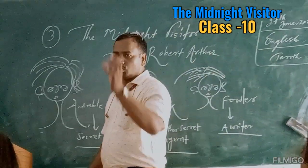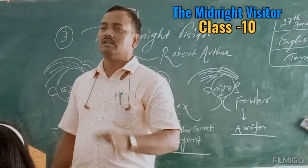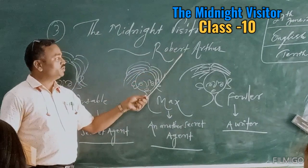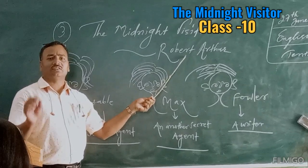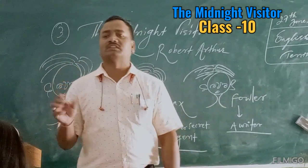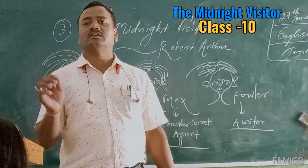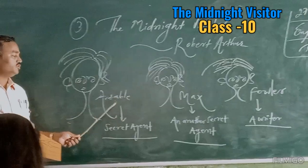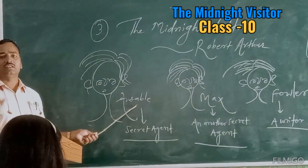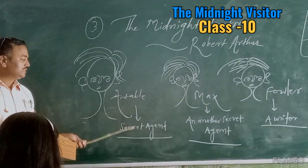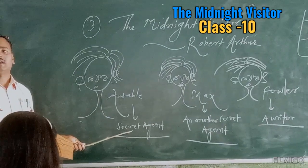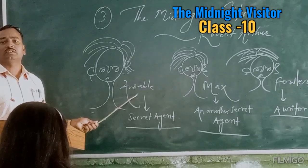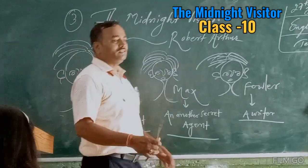Now I am going to introduce the whole summary of the chapter. 'The Midnight Visitor' is an interesting story written by Robert Arthur. This story is completely full of suspense, full of secret, full of mystery. Ausable is a secret agent and a spy. His work is to keep an eye on spy work, and he is expert in his profession as a secret agent.